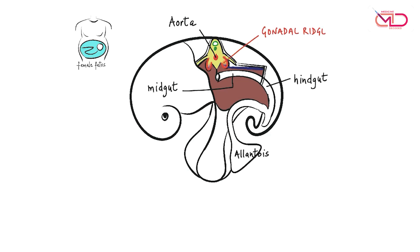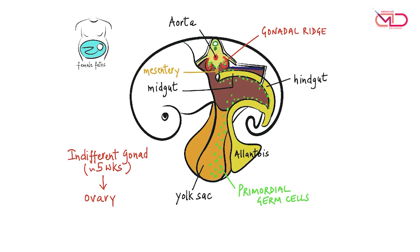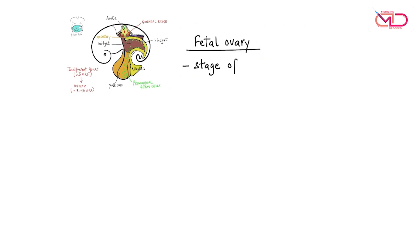The process of oogenesis begins in the intrauterine life of the female fetus itself. The gonads develop in the region of the gonadal ridge in the posterior abdominal wall. Initially, at around five weeks of gestation, it's an indifferent gonad. The primordial germ cells, which are the future gametes, are identified first in the region of the yolk sac, from where they migrate to the developing gonad at around six weeks of gestation along the mesentery of the gut.